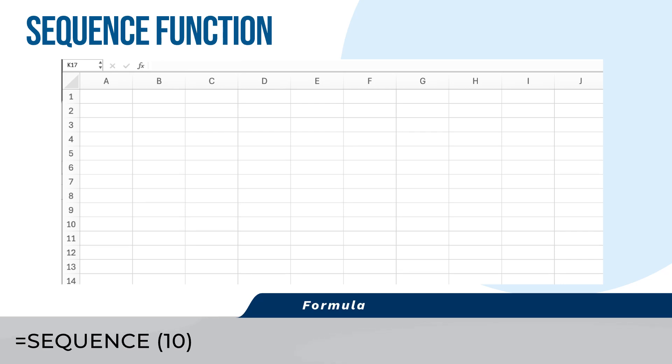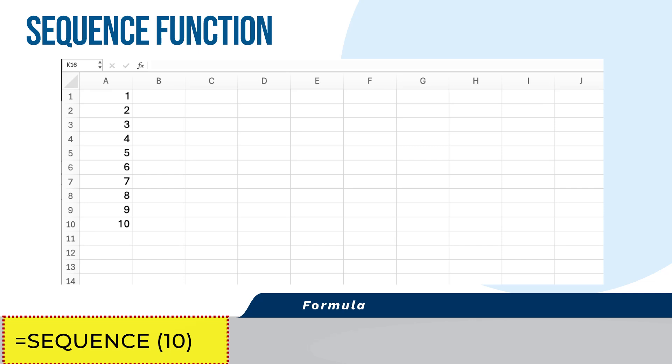Generating a simple sequence. Select the cell where you want the sequence to begin. We'll use cell A1. Enter the formula equals Sequence 10 and press Enter. The result will be a sequence of numbers from 1 to 10 in column A.